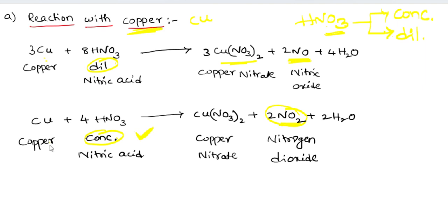All concentrated nitric acid reactions — whether with copper, zinc, sulfur, or phosphorus — produce nitrogen dioxide and water as common products. With dilute nitric acid, nitric oxide is the main product; with concentrated nitric acid, nitrogen dioxide is formed.